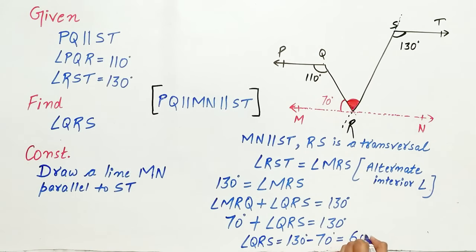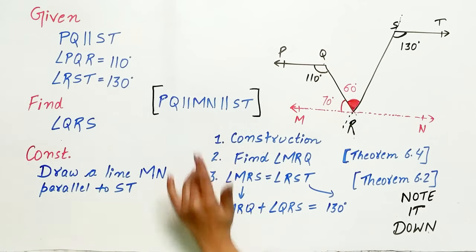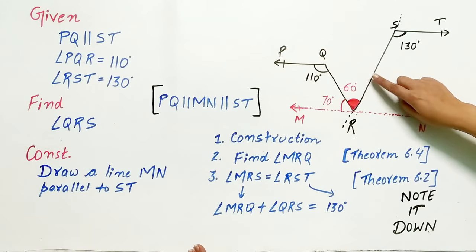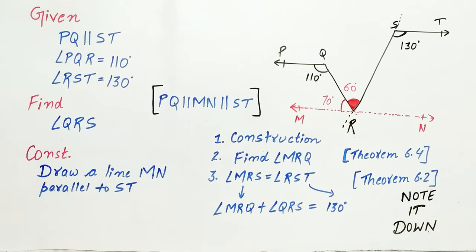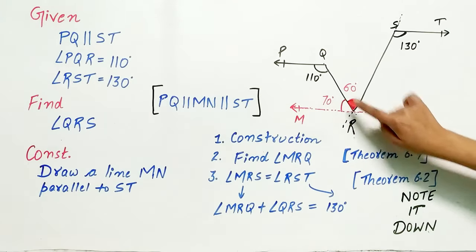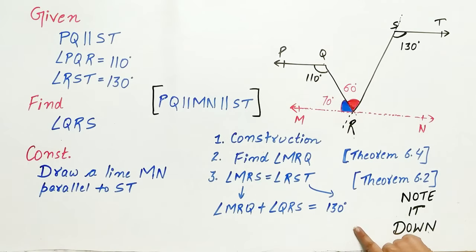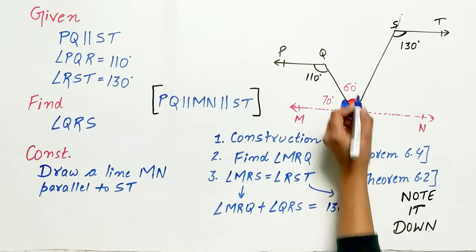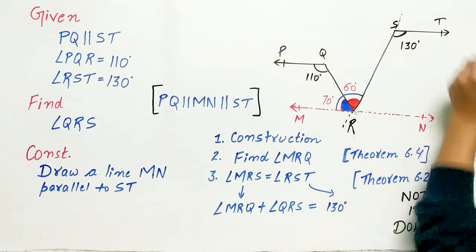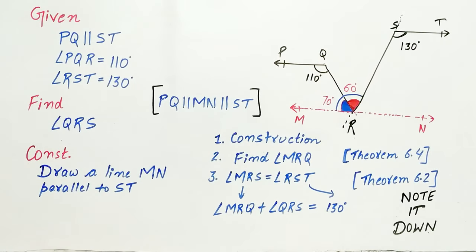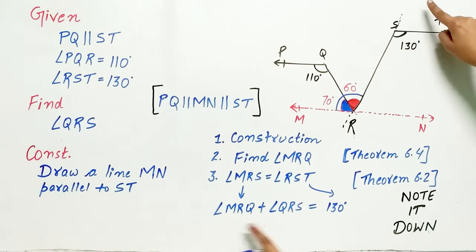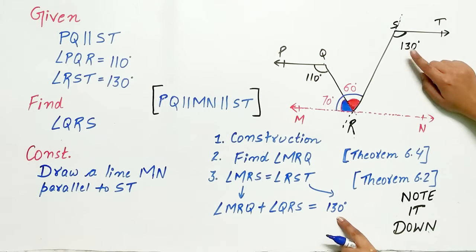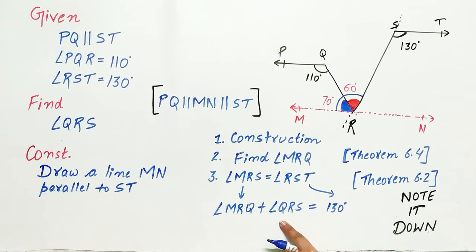A quick recap. Follow the steps to find angle QRS. The first step is to do the construction. Second step is to find angle MRQ. Third step, angle MRS equals angle RST because of alternate interior angles. Angle MRS can be expressed as angle MRQ plus angle QRS which equals 130 degrees. And find angle QRS.